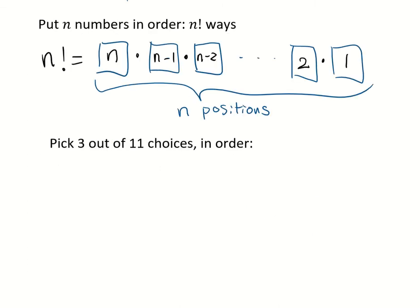Now let's look at this case. I want to pick 3 out of 11 choices and put them in order. We can use the multiplication principle to find the number of ways. First of all, we have 3 numbers to pick, so 3 positions.